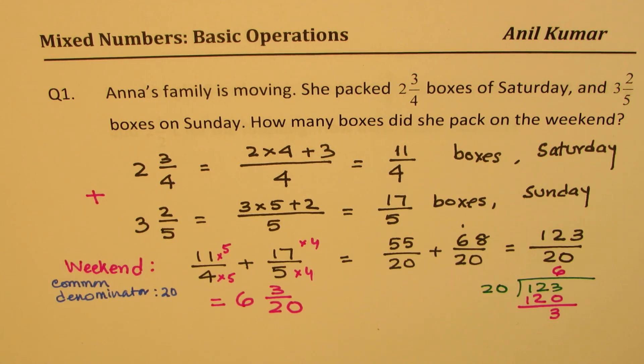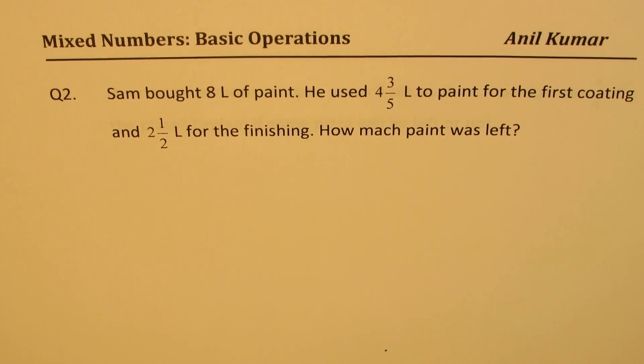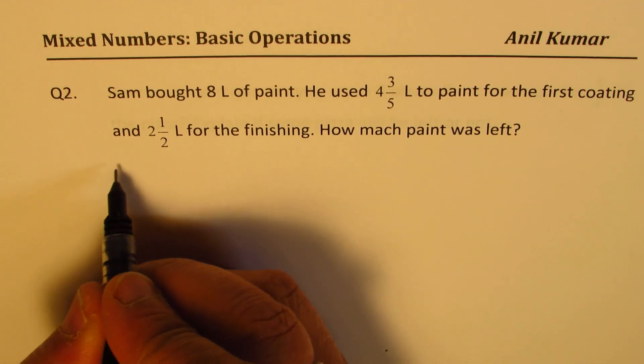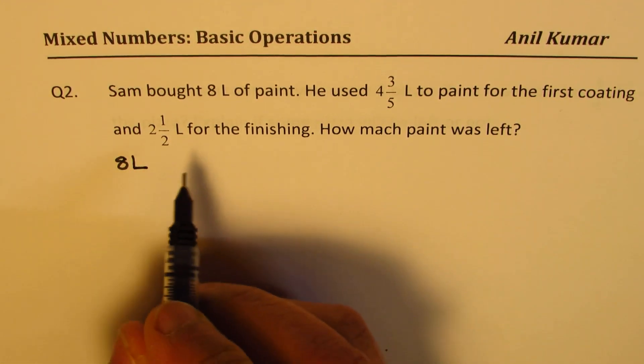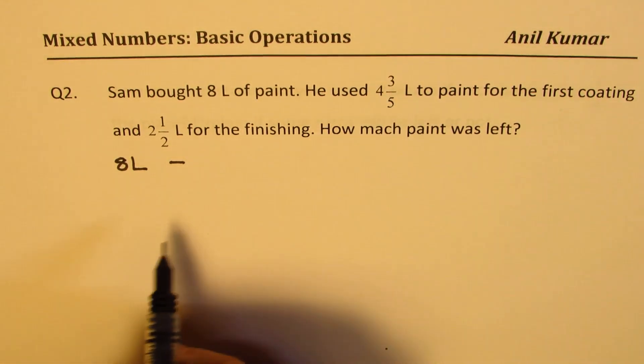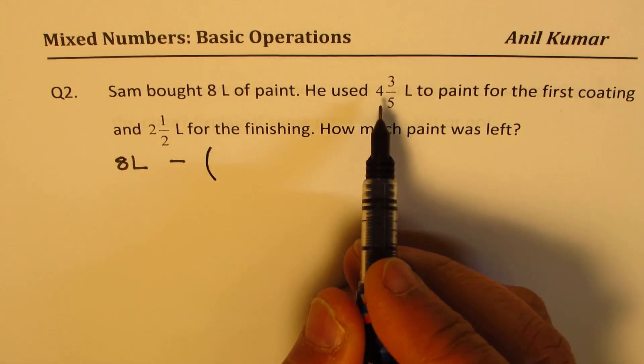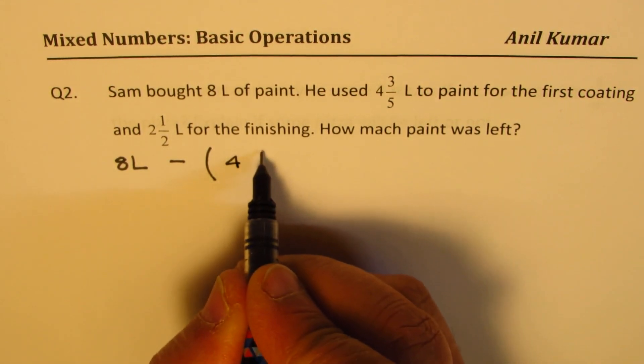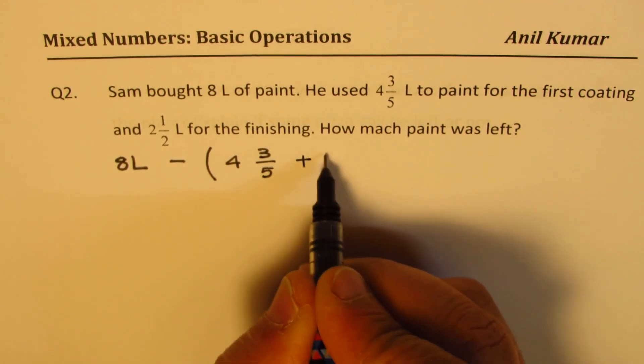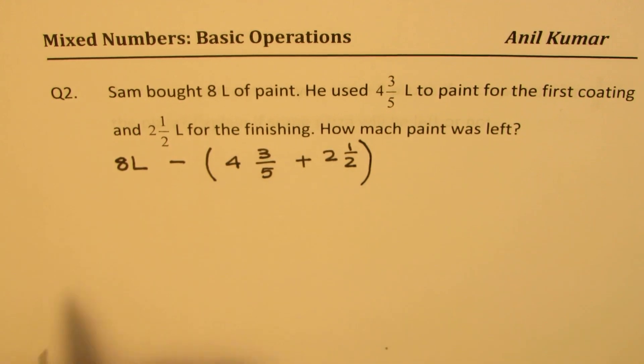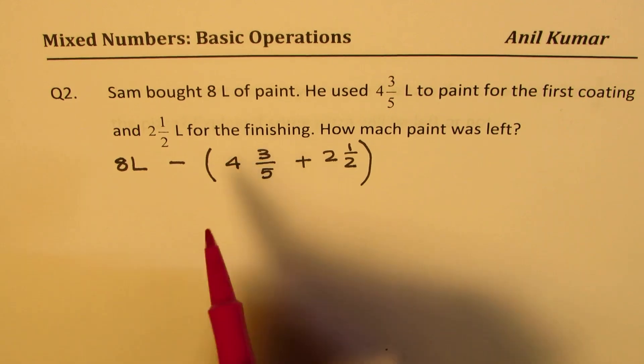So I hope the concept is clear. Now, let's move on and take question number 2. Sam bought 8 liters of paint. He used 4 3/5 liters to paint for the first coating and 2 and a half liters for the finishing. How much paint was left? So he bought 8 liters. From 8 liters, we have to take away what was consumed. So what was consumed was addition of these two, which is 4 3/5 plus 2 and a half. So this is what he used. He bought 8 liters, so when you take away, you get your answer.